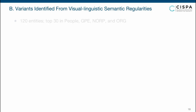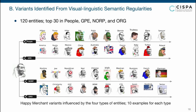We applied this pipeline on 120 entities from four categories, collecting the top 30 most frequent entities per category from posts in the Fortin dataset. Here are some examples of the identified variants, with the entity shown above each variant. By annotating all variants, we found that 76% to 80% of the geopolitical and nationality entities have corresponding variants, indicating Happy Merchant is frequently fused with countries, nationalities, and religions. We also found that more than 40% of entities about political figures and organizations have corresponding variants.